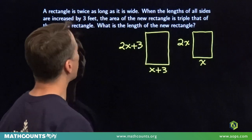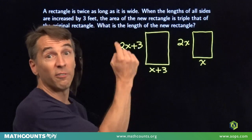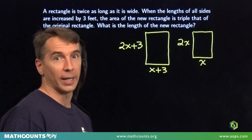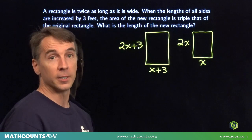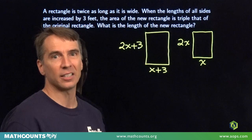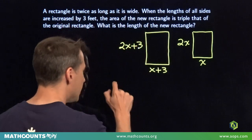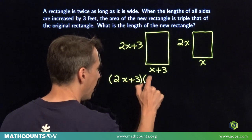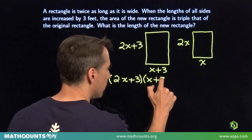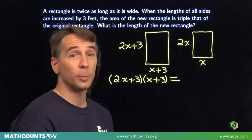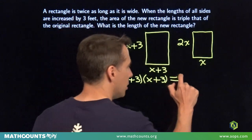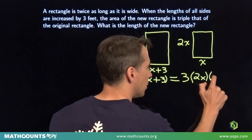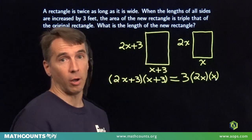Now let's go back and look at these words, see if we can build an equation and find x. The area of the new rectangle is triple that of the original rectangle. That's an equation in words. Let's make it an equation in x. The area of the new rectangle, we take our 2x plus 3, we're going to multiply that by x plus 3. And that equals triple the area of the original rectangle, so it's triple 2x times x. Now we have an equation we can solve for x.